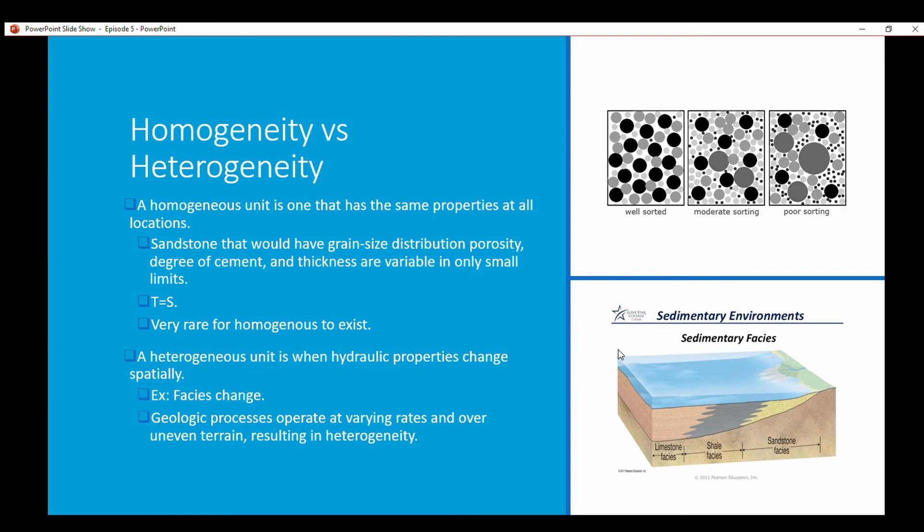Then the limestone facies will form at the extent where a reef would form, in deeper water. That's an example of heterogeneous units. You'll have different hydraulic properties for each of these facies. Geologic processes operate at varying rates and over uneven terrain which results in heterogeneous units.